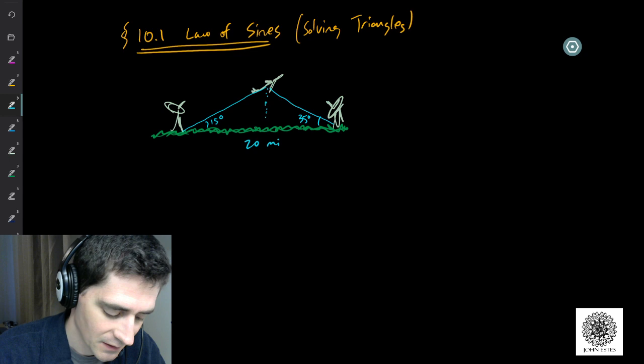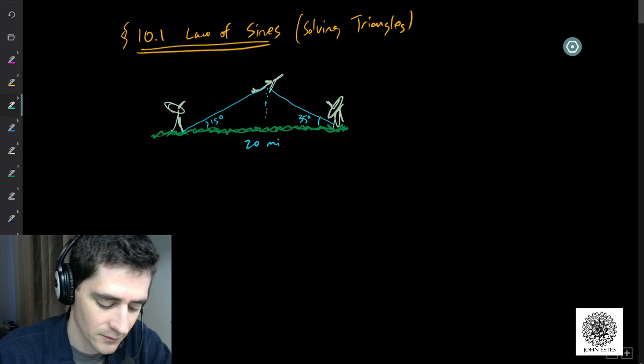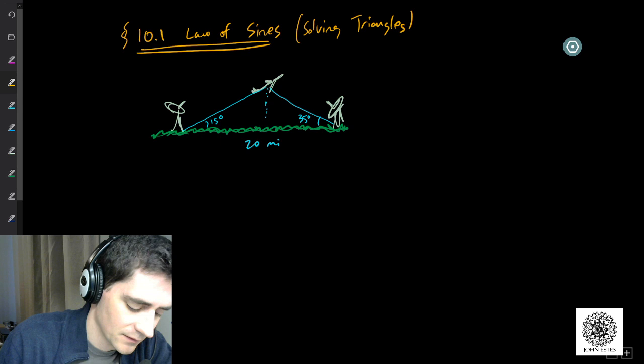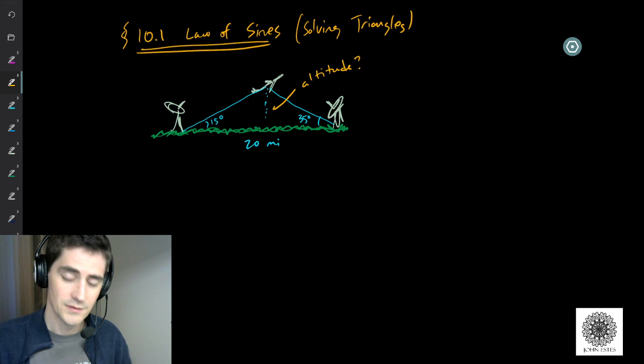You have two satellites pointed up at a plane, and the satellites are 20 miles apart. The signal from one satellite to the plane is 15 degrees, and the other is 35 degrees. From that, can we figure out the altitude of the plane — how high up it is? We would have to be able to solve this triangle in order to figure out the height.